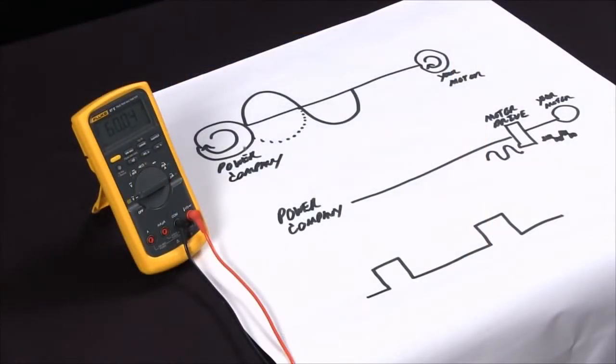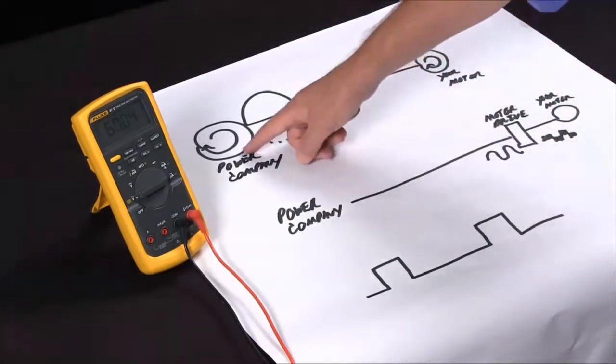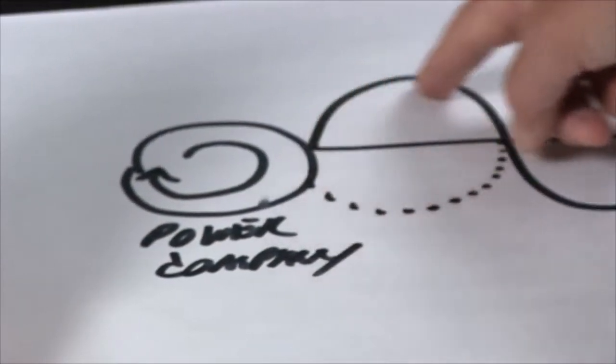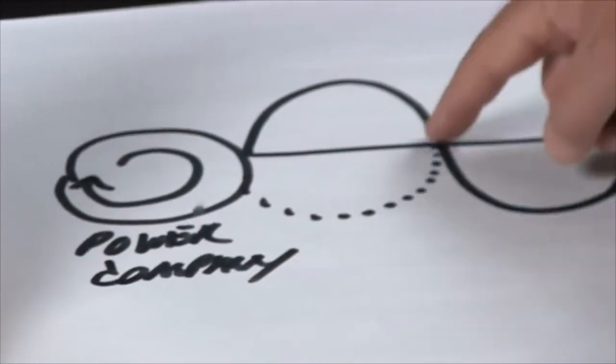As a quick review, what frequency is, is how fast is this signal moving. And with the sine wave, we have a power company that's generating a circle, and then we take that circle and we send it down to us.